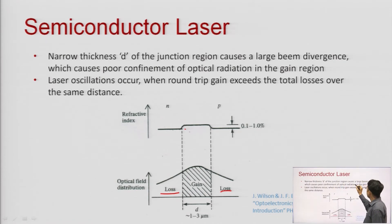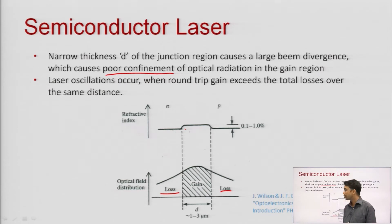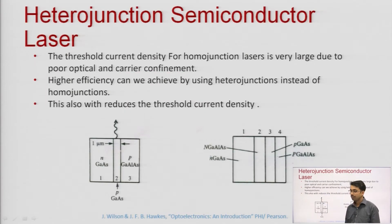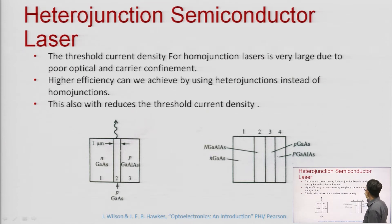The narrow thickness d of the junction region causes large beam divergence. This is due to poor confinement of optical radiations in the gain region — we want to confine the optical radiations in the gain region to get more optical gain. Laser oscillations occur when round-trip gain exceeds total losses over the same distance. The threshold current density for homo junction lasers is very large due to poor optical and carrier confinement.